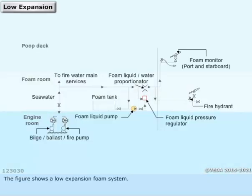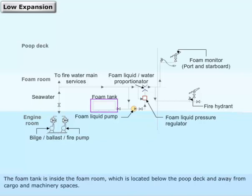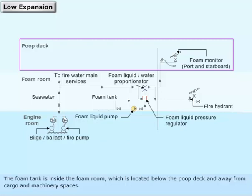The figure shows a low-expansion foam system. The foam tank is inside the foam room, which is located below the poop deck and away from cargo and machinery spaces.